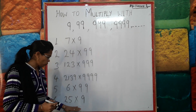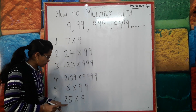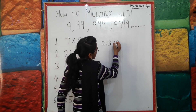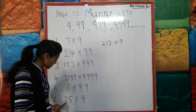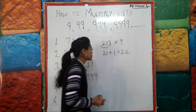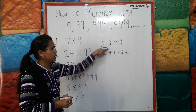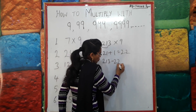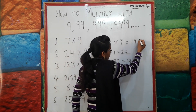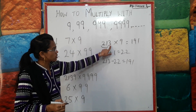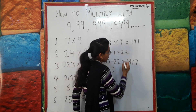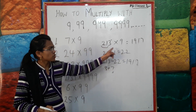Now extending this trick: multiply a triple digit by single 9. For example, 213 × 9. Take the first two digits: 21, add 1 to get 22. Subtract 22 from the full number: 213 minus 22 = 191. That is the first part of the answer. Now take the last digit 3, add 7 to convert it to 10. The last digit of the answer is 7. The final answer is 1917.